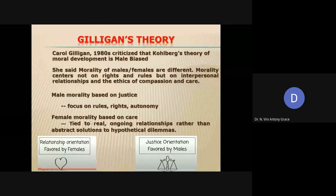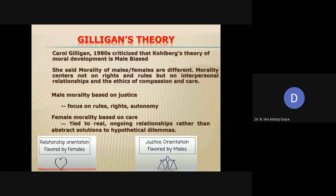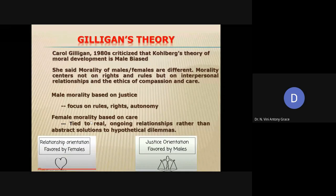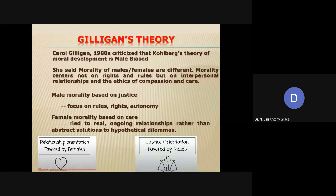Let us move on to the second theory of moral development, which is called Gilligan's theory. It was framed by Carol Gilligan. She is a female and she is a student of Kohlberg.